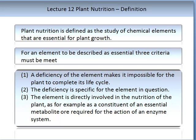Plant nutrition is defined as the study of chemical elements that are essential for plant growth. For an element to be described as essential, three criteria must be met. Firstly, a deficiency of the element makes it impossible for the plant to complete its life cycle.